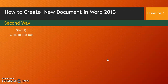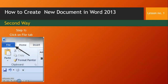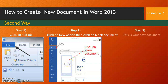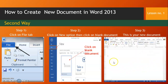The second way to create a new document: click on the file tab. After clicking on the file tab, click on blank document. After clicking on blank document, this is your new document — the screen will appear where you can do your work.